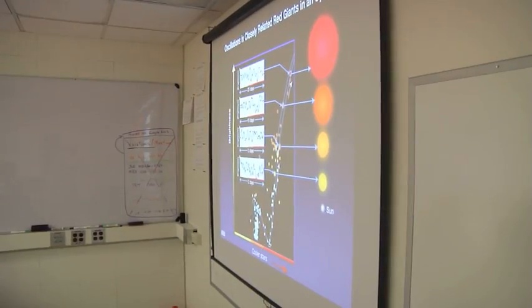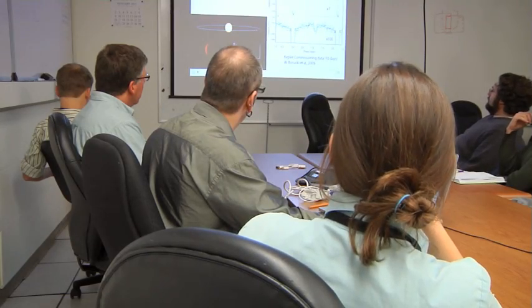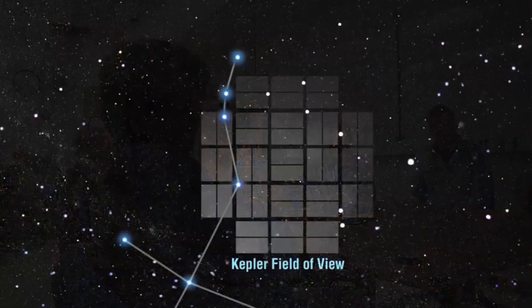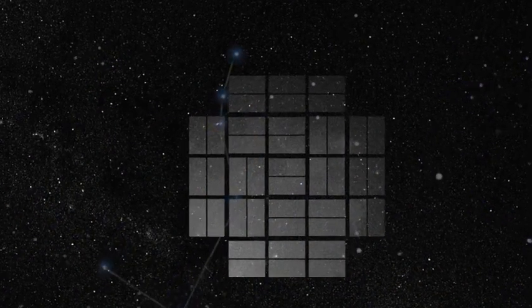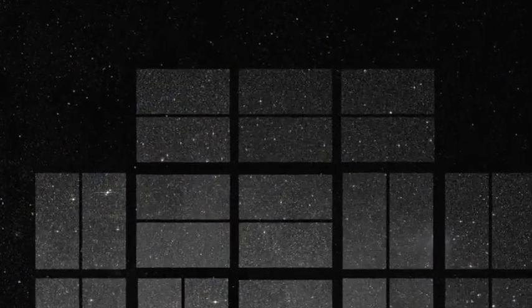Not only is the Kepler team finding individual planetary candidates, they are also discovering some of their first multi-planet systems as well. They have detected 86 potential planetary systems that may have two or more planets.